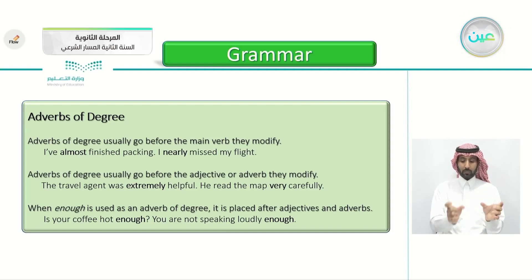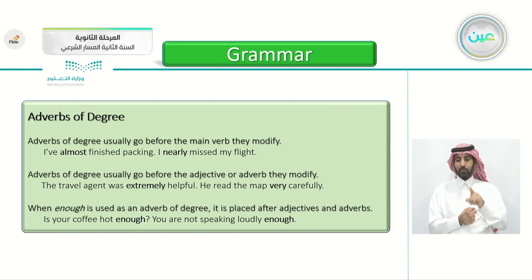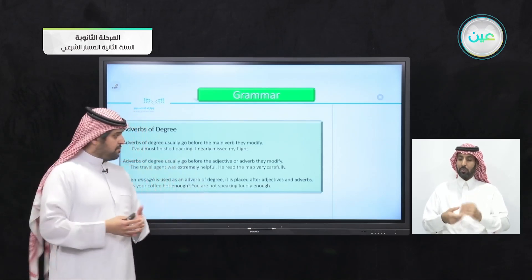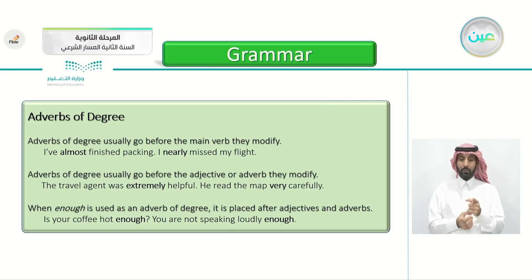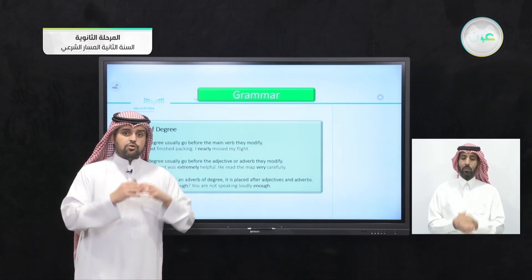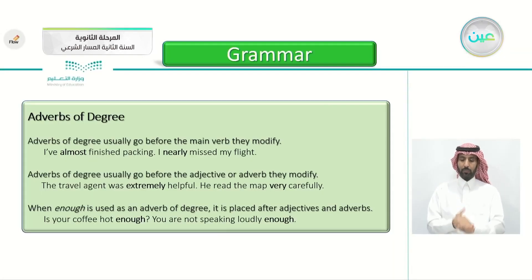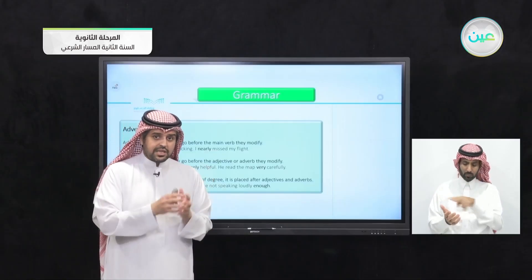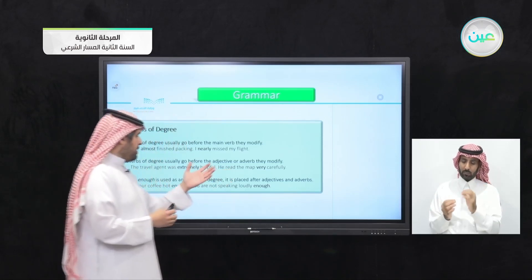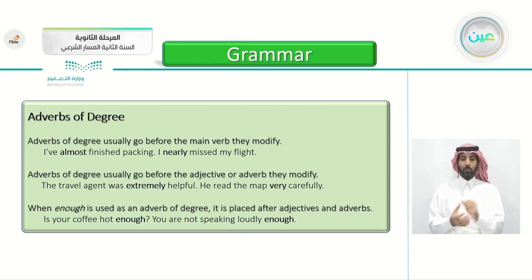Adverbs of degree go before the adjective or adverb they modify. For example: 'The travel agent was extremely helpful' — he did many things for me, he made it easier. 'He read the map very carefully' — he paid attention to details, reading step by step and location by location. Notice that 'extremely' and 'very' go before the adjective or adverb: extremely helpful, very carefully.